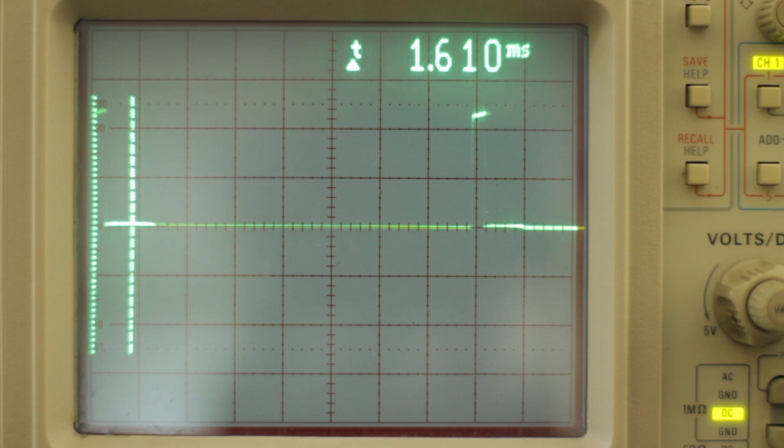And here on the oscilloscope you can see that the signal pulse length changes between 1 and 2 milliseconds.